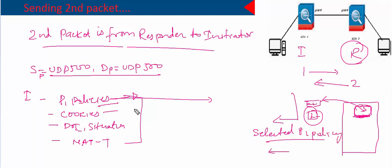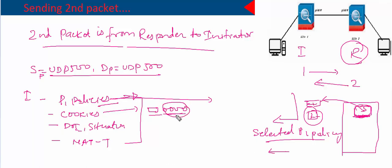Then it sends cookies. In the first packet, we had an initiator cookie and a responder cookie — the initiator cookie was calculated from the initiator, and the responder cookie field was set to zero because we don't know the responder cookie yet. This is a brilliant way to identify the first packet in a capture of the IKE exchange: the packet with the responder cookie field set to zero is the first packet of the communication. Only the first packet of the IKE exchange will have the responder cookie field set to zero.